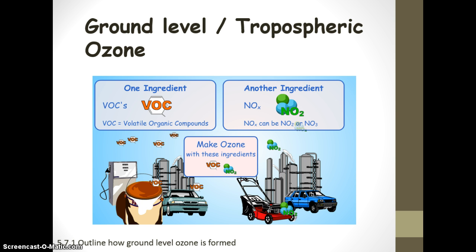Nobody is putting ozone directly into the air — it is a secondary pollutant. Primary pollutants are emitted directly from their source, like a factory or a car, but secondary pollutants react with other chemicals in the air to form something harmful. Ground-level ozone is formed from two primary pollutant ingredients: volatile organic compounds (VOCs) and nitrogen oxides.